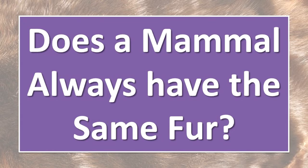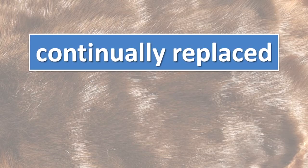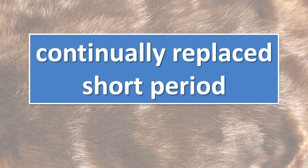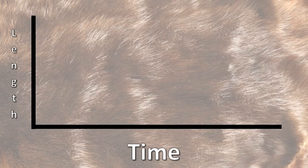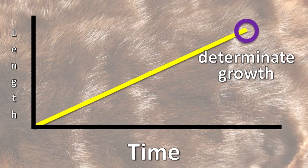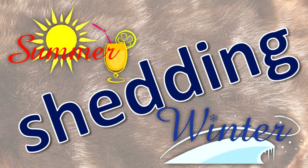Does a mammal always have the same fur? All mammal hairs are replaced — some hairs are continually replaced, while others are replaced in a short period of time, and the same mammal can undergo both processes. Some fur grows at the same rate and time and reaches a stopping point, and may be replaced in a process known as shedding. Shedding is often associated with the type of weather: a heavy coating of fur is not suitable in hot weather, and a summer coating of fur may not be appropriate in winter.